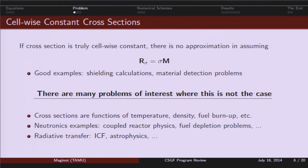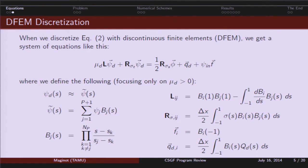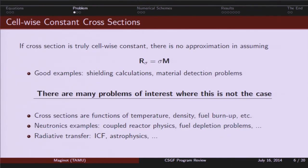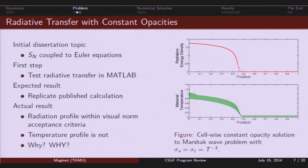So, kind of examples would be shielding type calculations, the inverse material detection type problems, things like that. But there's a large number of problems where pulling out cross-section or assuming it's cell-wise constant is not a good approximation at all. That's because cross-sections, interaction rate cross-sections, are functions of temperature, density of the material, the burn-up or isotopics of the material, if you're talking like a reactor depletion problem. And there's examples in both neutronics, which is just solving the steady-state neutron transport equation. And then there's also examples in radiative transfer. So, like in neutronics, you have coupled reactor physics problems or depletion problems. Radiative transfer, you're thinking inertial confinement fusion. Astrophysics applications, many others.